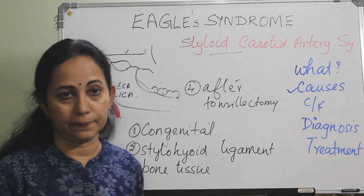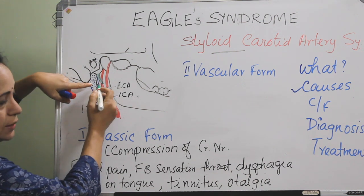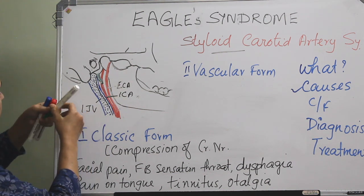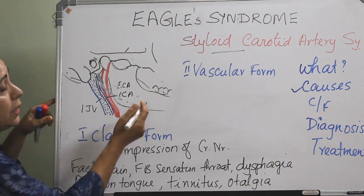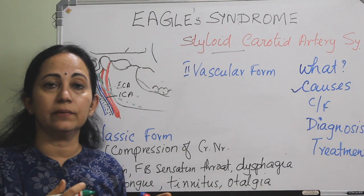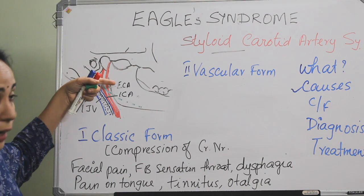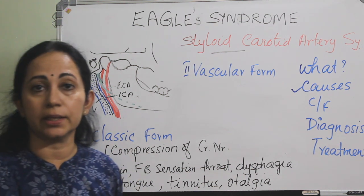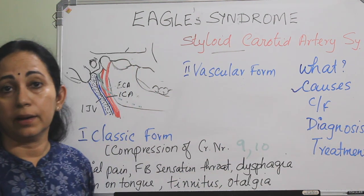The clinical features can be divided into a classic form and a vascular form. If the styloid process is elongated or there is calcification of the stylohyoid ligament, it lies between the internal and external carotid arteries. Mainly it causes compression of the cranial nerves — especially the ninth nerve as it passes over the superior constrictor muscle — but there can also be compression of the tenth, fifth, or seventh nerves.